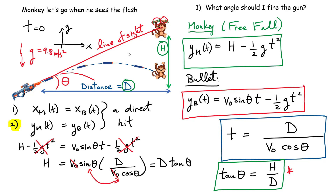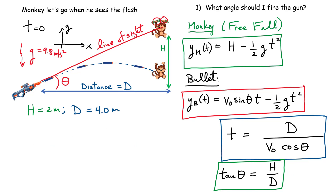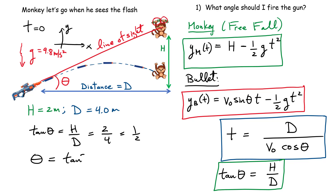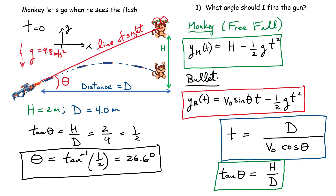Let's substitute numbers. The height H is two meters and the initial distance D is four meters. We have tan θ = H/D = 2/4 = 1/2. Therefore the angle is θ = arctan(1/2), which gives approximately 26.6 degrees. Fire the weapon at 26.6 degrees — the angle made by that line-of-sight triangle — and you're going to hit the monkey.